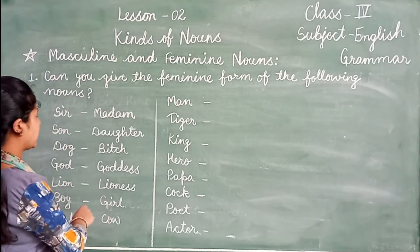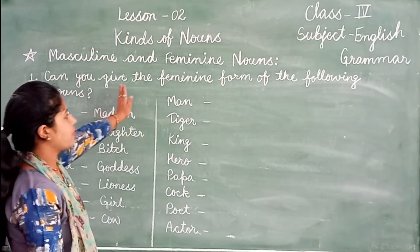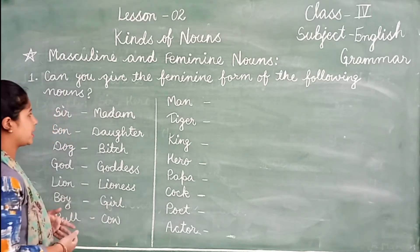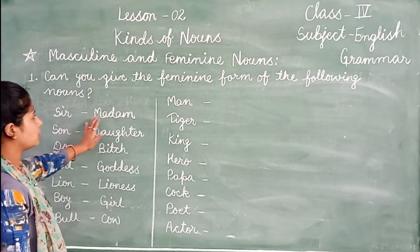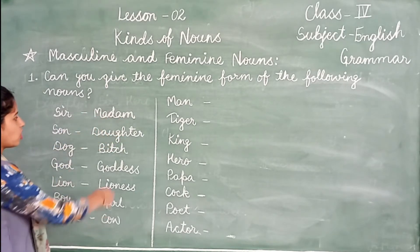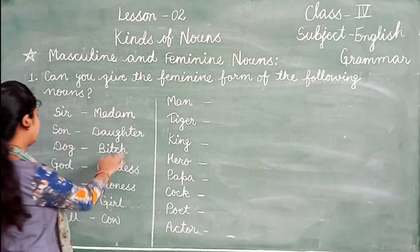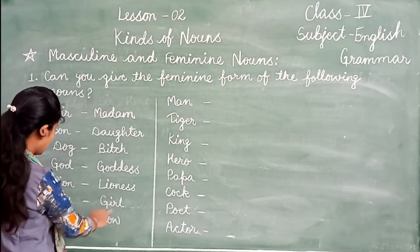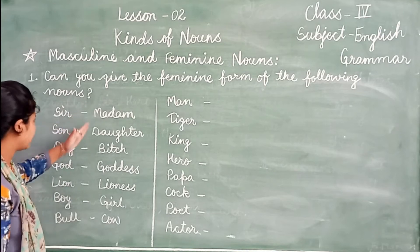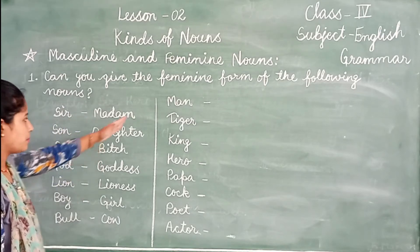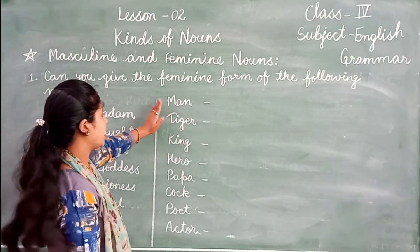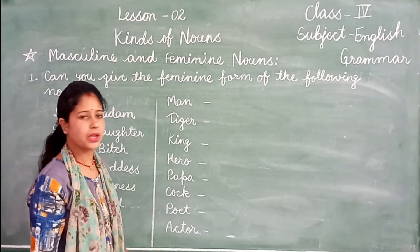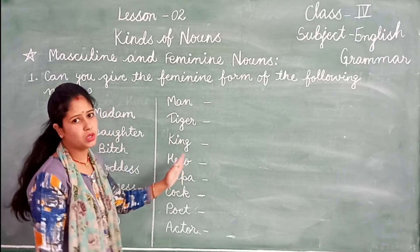Now we are asked an exercise: can you write the feminine form of the following names? Sir → madam; son → daughter; dog → bitch; god → goddess; lion → lioness; boy → girl; bull → cow. Now you have to write the feminine forms of: man, tiger, king, hero, papa, cop, poet, actor.